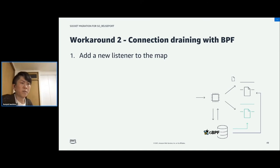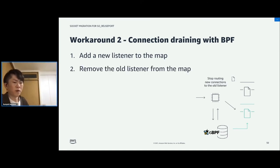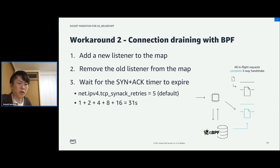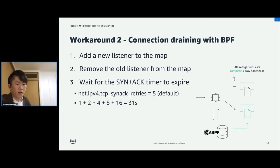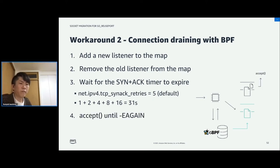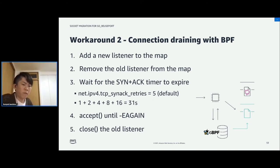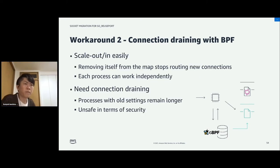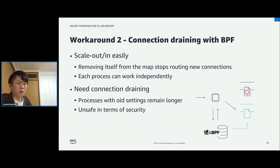With this feature, we can avoid connection failure in the following steps: First, add a new listener to the map. Then, remove the old listener from the map — this stops routing new connections to the old listener. And wait for the SYN-ACK timer to expire, which releases SYN-RECEIVED sockets by default. Then we can ensure that all pending requests complete the three-way handshake and are put into the accept queue. Then we can do connection draining to pop connections out of the accept queue. In this way, we can confirm that there are no connections tied to the listener, and finally we can close it safely.